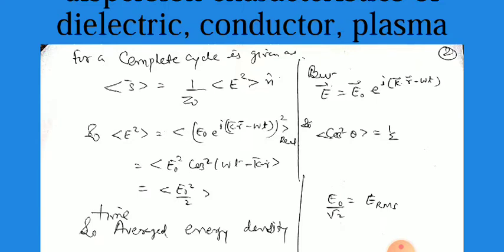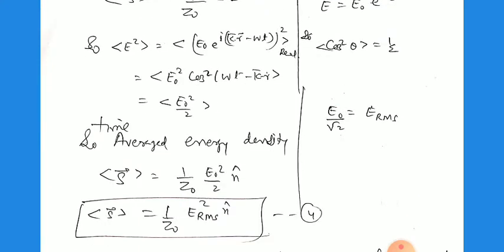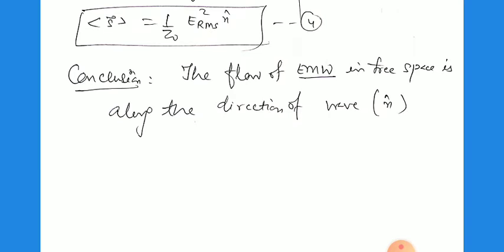So the average of E² is E₀²/2, and E₀/√2 is called E_rms. Therefore, the time-averaged Poynting vector equals (1/Z₀)(E₀²/2) n̂, or equivalently S = (E_rms²/Z₀) n̂. We can conclude that the Poynting vector depends on the wave impedance and the electric field, and its direction is along the direction of propagation, that is, along n̂.